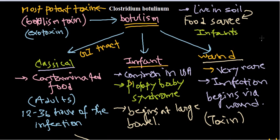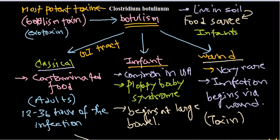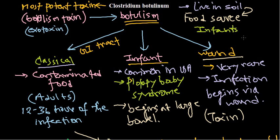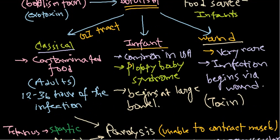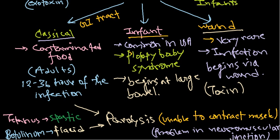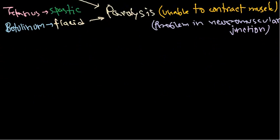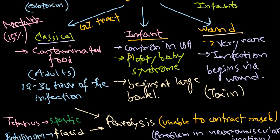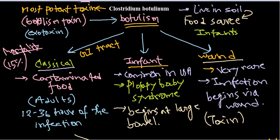It is also important to consider which muscle the botulism toxin is acting on. If it affects the heart muscle, the respiratory muscles, or the diaphragm, it will surely lead to death. In classical botulism the mortality rate is almost 15 percent or more. In the future video we will be talking about the mechanism of pathogenicity of this Clostridium toxin.